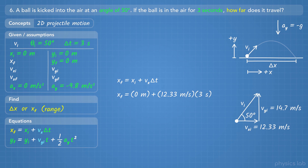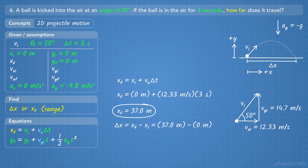We can take that and plug it into this equation, along with the initial x position and the time, and we get 37 meters for the final x position. Since the initial x position is 0, that's the same as delta x. So, using only the initial angle and the time in the air, we found the range, which is 37 meters.